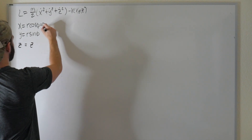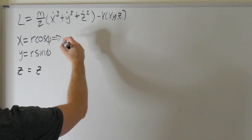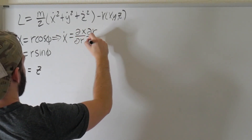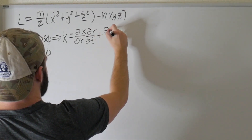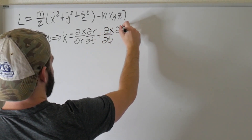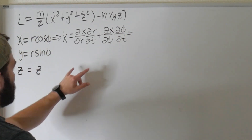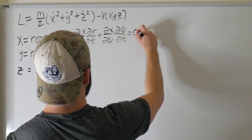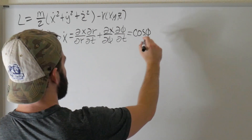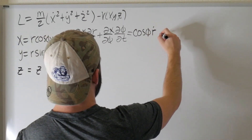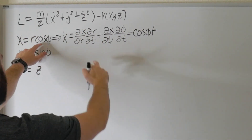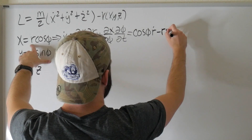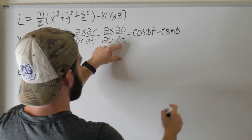The way we have to do that is using the partial derivative chain rule. For example, x_dot equals (dx/dr)(dr/dt) plus (dx/dφ)(dφ/dt). Evaluating each partial derivative: dx/dr gives cosine φ, and dx/dφ gives minus r sine φ. So x_dot equals cosine φ · r_dot minus r sine φ · φ_dot.